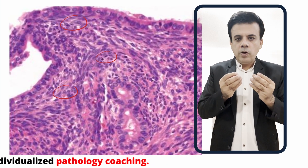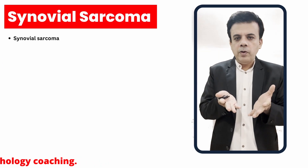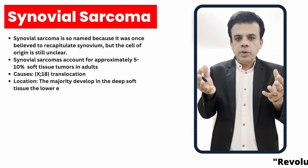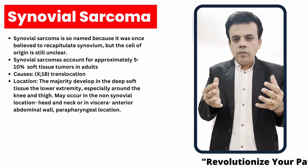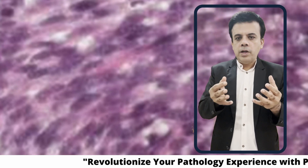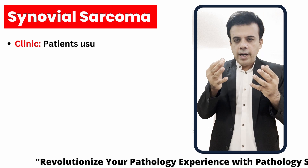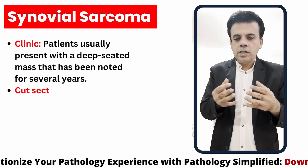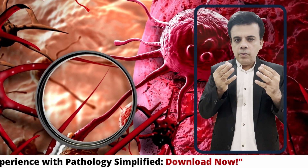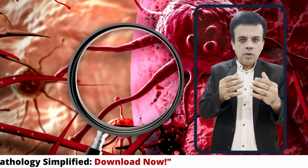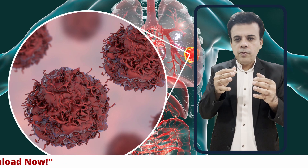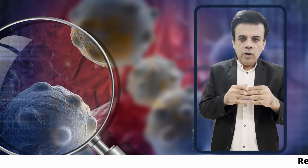Synovial sarcoma, as the name implies, was originally thought to originate from synovial sites — the cells lining the synovial joints. However, it was later found that it is not confined to synovial joints. It is also seen in intra-abdominal, intrathoracic, parapharyngeal, head and neck, and visceral locations. It is very commonly seen around the knee joints, upper extremity joints, and the soft tissue of the thigh.